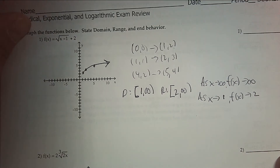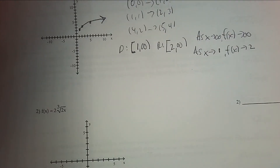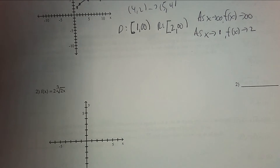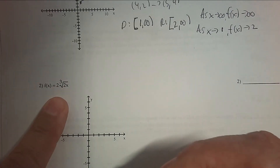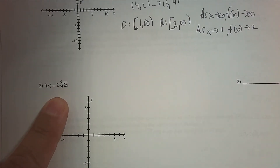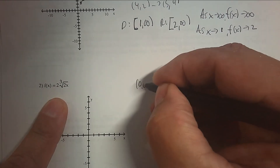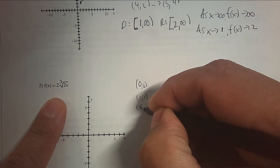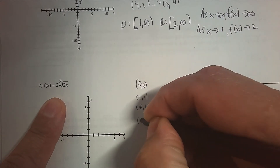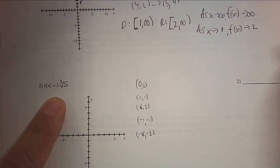Number 2: can you graph a cube root? When graphing a cube root, start with the parent points: (0, 0), (1, 1), (8, 2), (−1, −1), and (−8, −2).